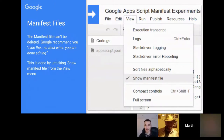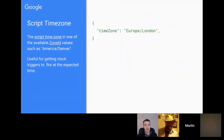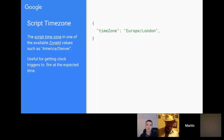So what's actually in the manifest file? One of the things you can do is set the script time zone, which can be useful if you're using a clock trigger and need to set the correct time. The time zone string is a Zone ID, which I think is a Java thing — there's a link so you can see which Zone IDs are available. You can also set this from the script editor menu as well.